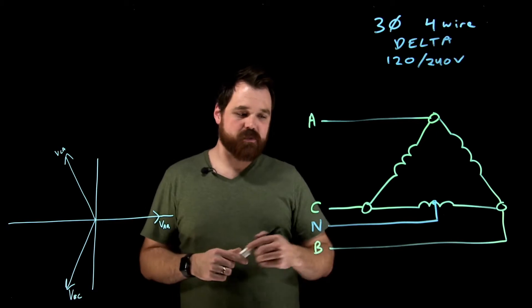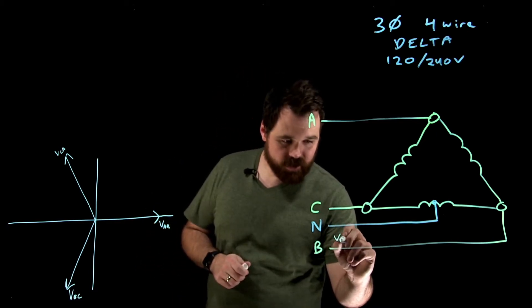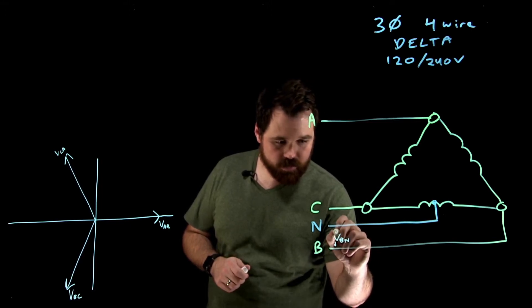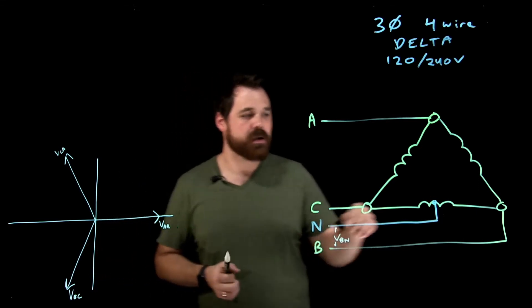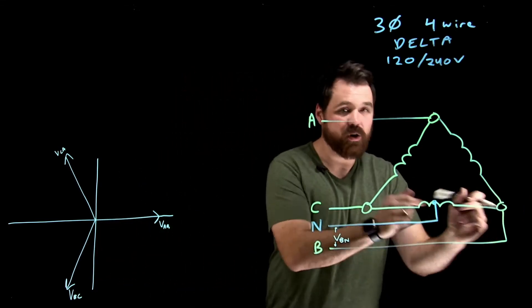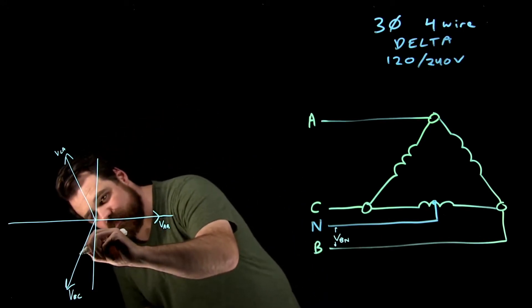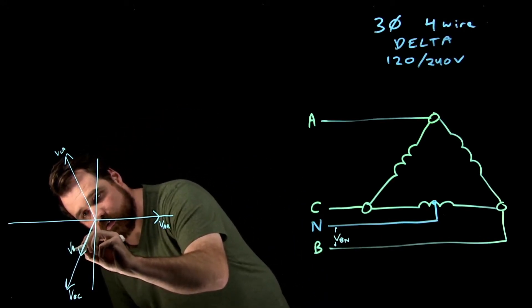Now, what we're going to talk about is these voltages here. So here I would read VBN. And B to N, we said, is 120 volts. It's the same polarity as VBC, only it's half. So we actually see VBN right there.